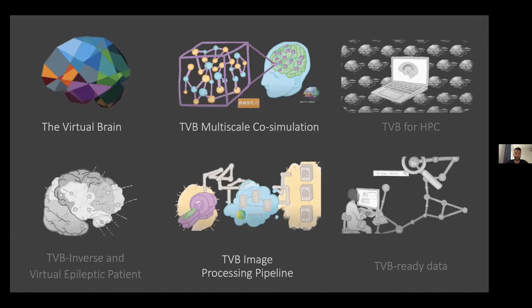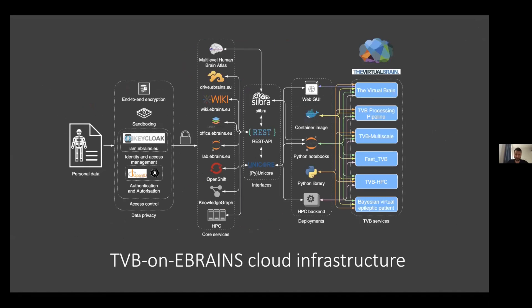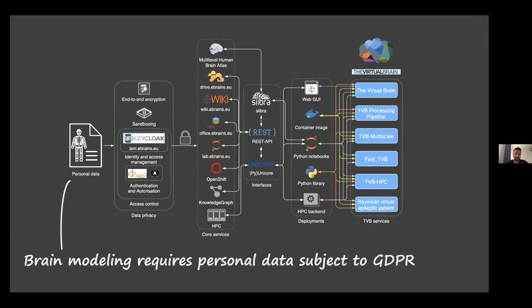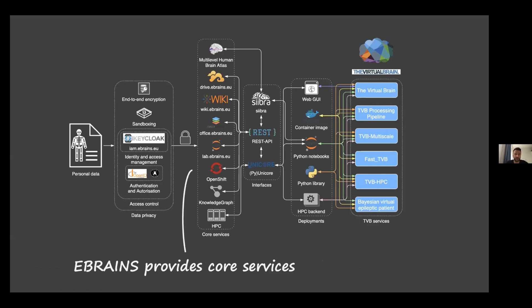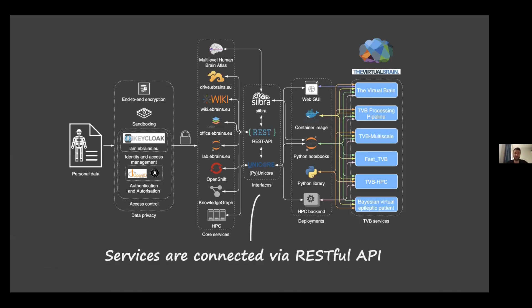Let's have a quick look and demo of three TBB on eBrains services. Starting with an overview of the whole infrastructure — it's a complicated picture with a lot of interacting components. Brain modeling requires personal data subject to data protection regulation, so we protect it with access control, encryption, and sandboxing. eBrains provides a number of core services: drive, the file system, wiki, office, the Jupyter lab instance, HPC backends, and so on. These services are all connected via a RESTful API. Just like Timo's Zebra toolbox, these different software packages talk to each other via such a RESTful API.